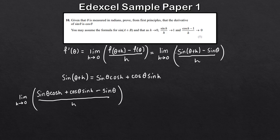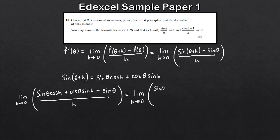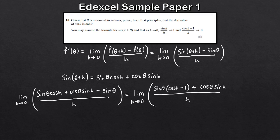Now we want to simplify the numerator. Notice we have sine θ cos h and a minus sine θ, so we factorize. Grouping the sine θ terms together and factoring out sine θ, we get sine θ(cos h minus 1) plus cos θ sine h, all over h.